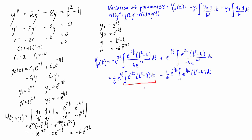For the first integral, we need to pick one function to differentiate and one to integrate. It's easier to differentiate t² - 4 and integrate e^(-2t). We differentiate t² - 4 all the way down to zero: first step gives 2t, then 2, then 0. Integrating e^(-2t) repeatedly gives -½e^(-2t), then ¼e^(-2t), then -⅛e^(-2t).